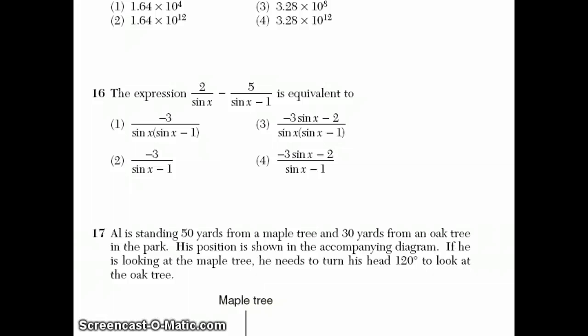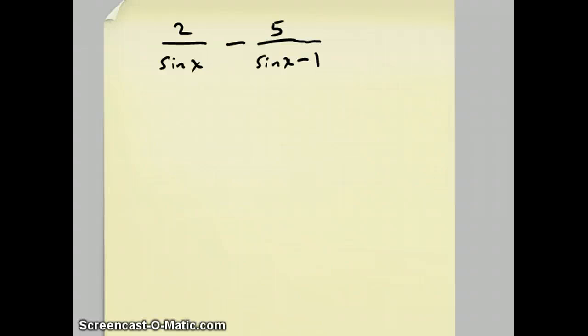Question 16 says the expression 2 over sine x minus 5 over sine x minus 1 is equivalent to. So, what we have here is subtracting fractions. I'm going to compare this question to an easier question, which would be something like this. 2 over x minus 5. This would be a little bit easier of a question. This x and x minus 1 don't have any common factors. So, to get the least common multiple, you just multiply the two things together.